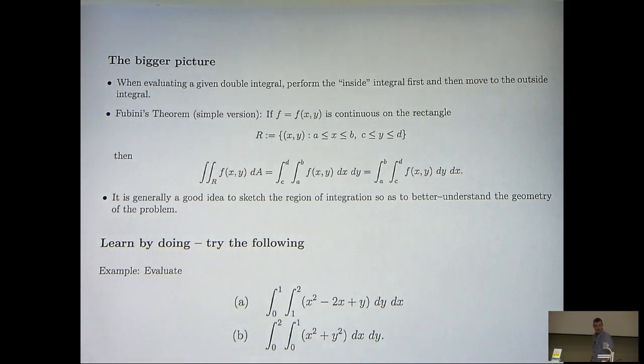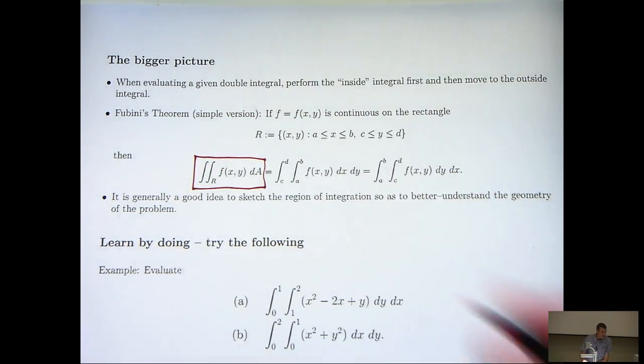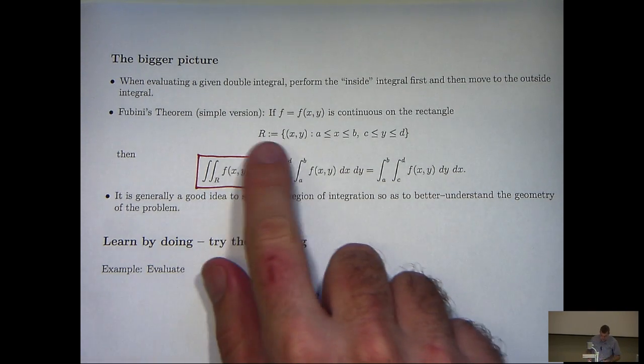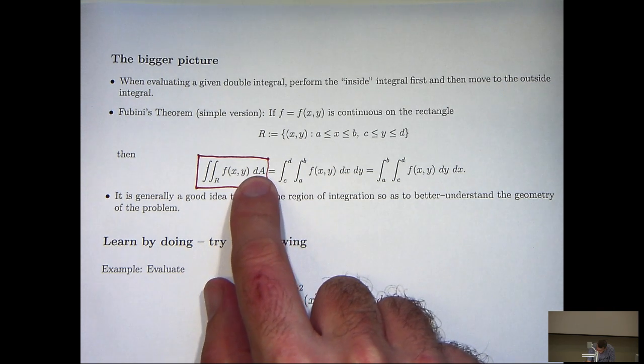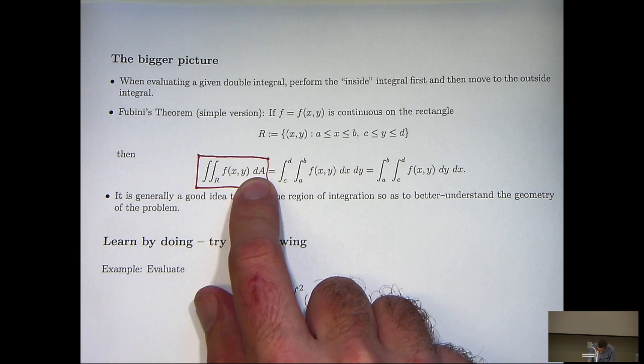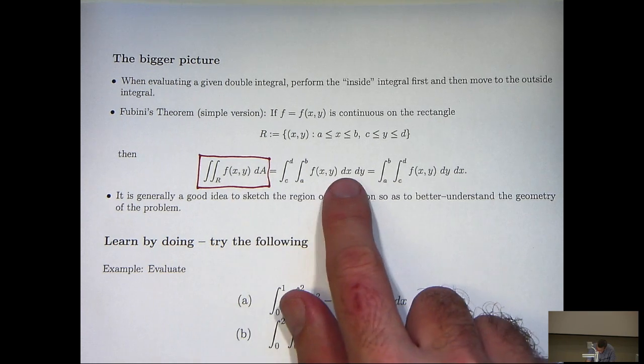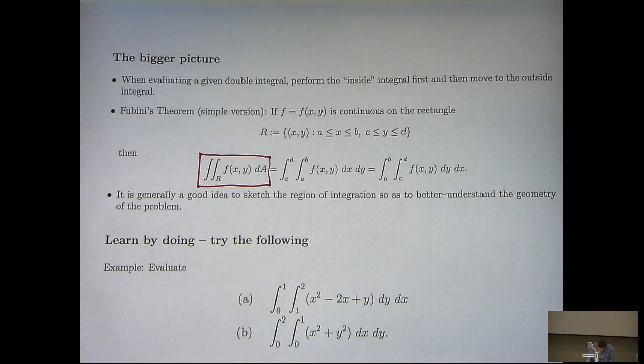Now something on notation. The general way of writing a double integral over a rectangular region is this notation here. The dA is called the area element. And you can think of dA as being dx dy or dy dx. The order is not necessarily fixed.